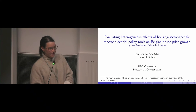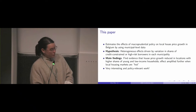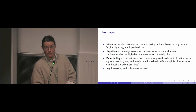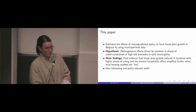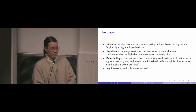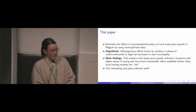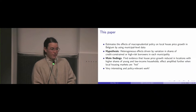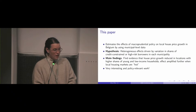Thanks a lot to the organizers for inviting me to discuss this paper — it was a very exciting project to learn about. As a short summary, this paper wants to estimate the effects of macroprudential policy on local house price growth in Belgium, using a nice set of municipal-level data. The hypothesis is that potentially heterogeneous effects on house prices are partly driven by variation in shares of credit-constrained or high credit-risk borrowers in each municipality. And the main finding is that, indeed, it seems that it is so.